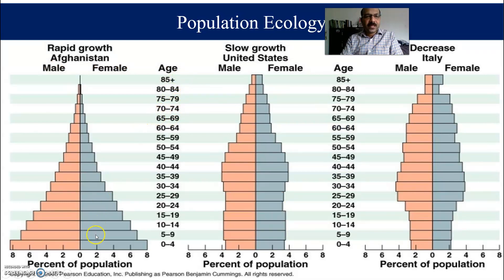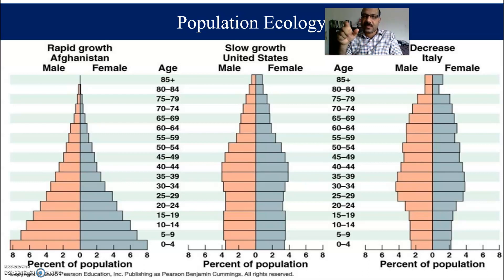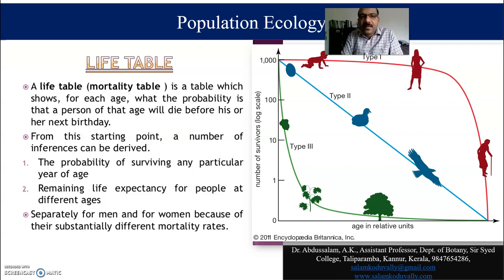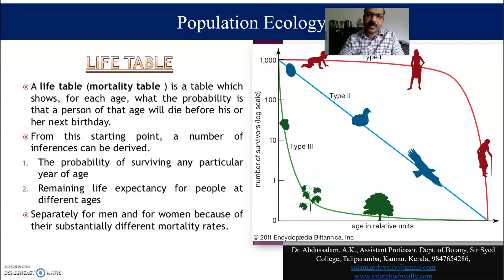We can see the different age groups and percentage of population in a rapid growth diagram, which we discussed in the last class. Now we move to another important topic: the life table. What is actually the life table? A life table, or mortality table, is a table which shows for each age what the probability is that a person of that age will die before his or her next birthday.